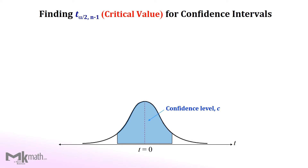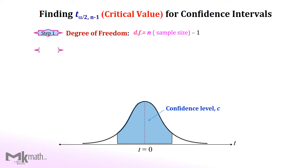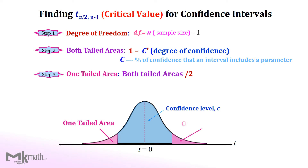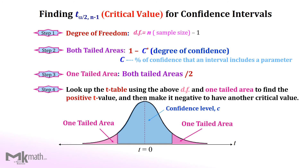There are 4 steps to find t-critical values for confidence intervals. Step 1: find the degree of freedom by subtracting 1 from the sample size. Step 2: find both tailed areas — subtract the confidence level from 1. Step 3: find the one-tailed area by dividing the two-tailed area in half. Step 4: find the t-score using the degree of freedom and one-tailed area.